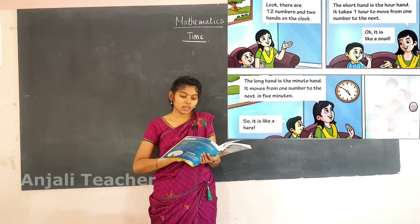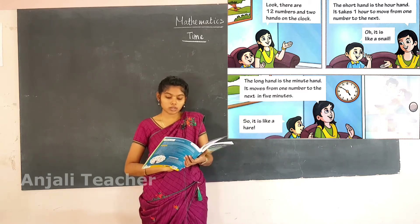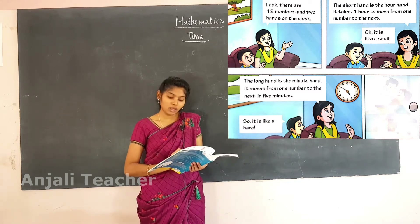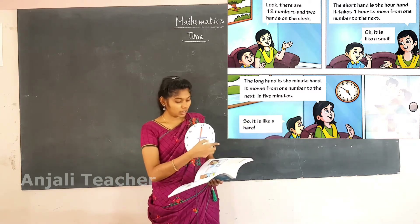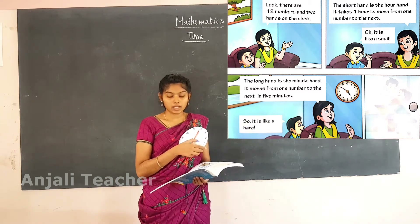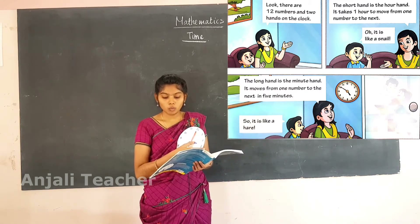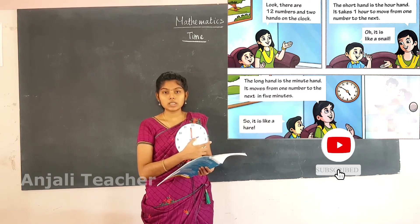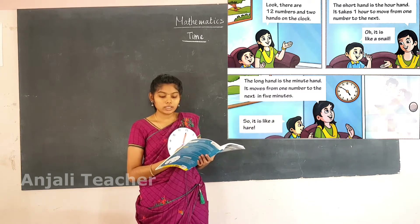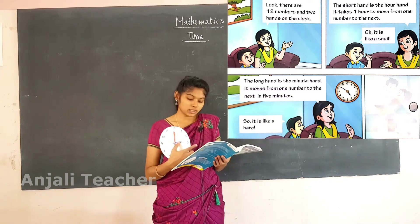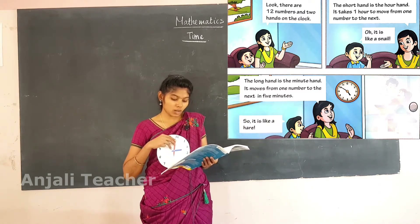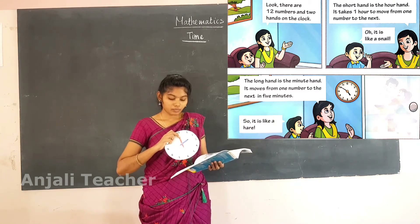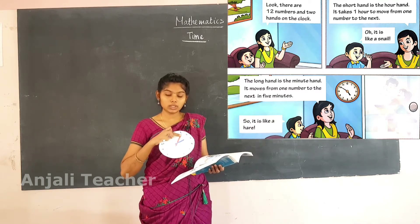There are 2 hands on the clock: the short hand and the long hand. The short hand is the hour hand — shown here in blue. It takes 1 hour to move from one number to the next number. The boy says it is like a snail because it moves so slowly. The long hand is the minute hand — it moves from one number to the next in 5 minutes. He says it is like a hare. It takes 5 minutes to move to the next number.